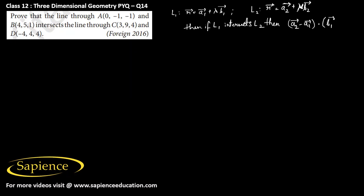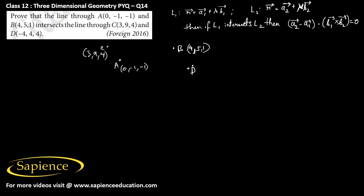Here we have the points A and B: A is (0, -1, -1) and B is (4, 5, 1). We also have points C and D: C is (3, 9, 4) and D is (-4, 4, 4). We need to check whether line CD intersects line AB.